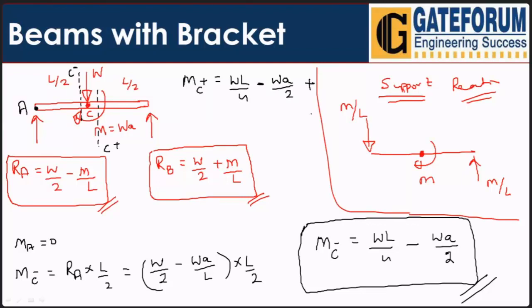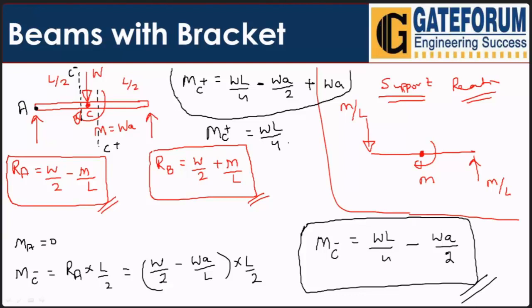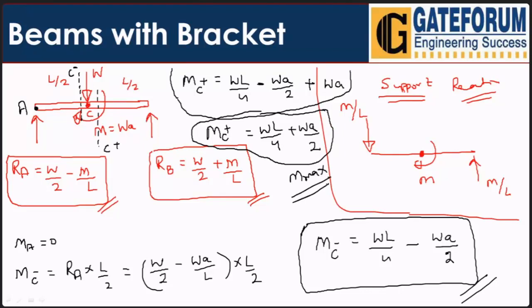Now for the bending moment at C+ (just after C), we add the applied moment W×a to the C− value: M(C+) = WL/4 − Wa/2 + Wa = WL/4 + Wa/2. This is also the maximum bending moment M_max, occurring at the C+ section — just to the right of point C.